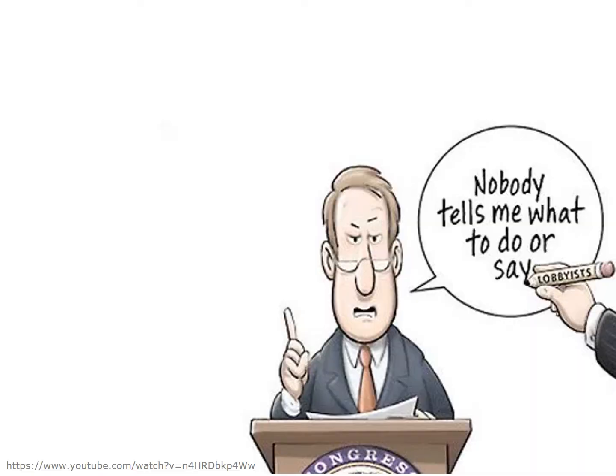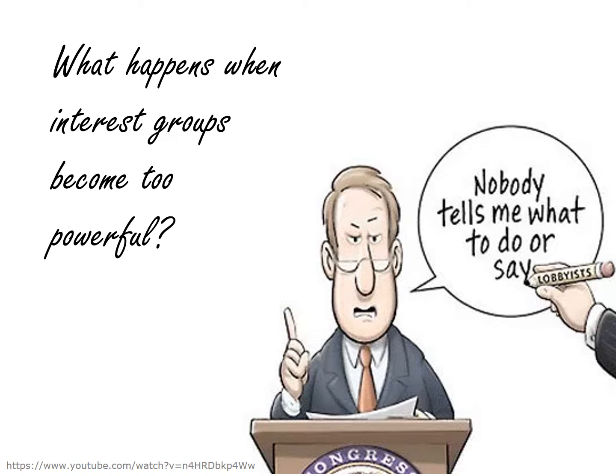What happens when interest groups become too powerful — when they actually start to tell your senator or representative what to do or say? Oftentimes, the actions of interest groups are left up to staffers or lobbyists, and so these actions may actually reflect what the staff or lobbyists want to see more than what the members of that group actually believe. A lobbyist is an activist who seeks to persuade members of the government to enact legislation that would benefit their group, and their group might guide them, but sometimes it's left up to the staffers and the lobbyists themselves.